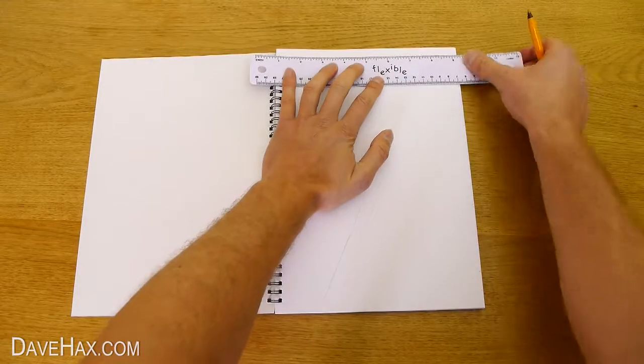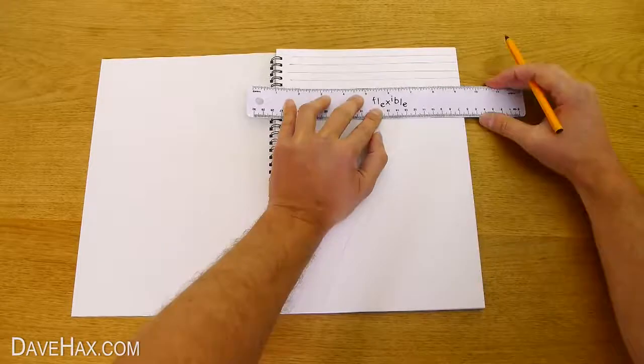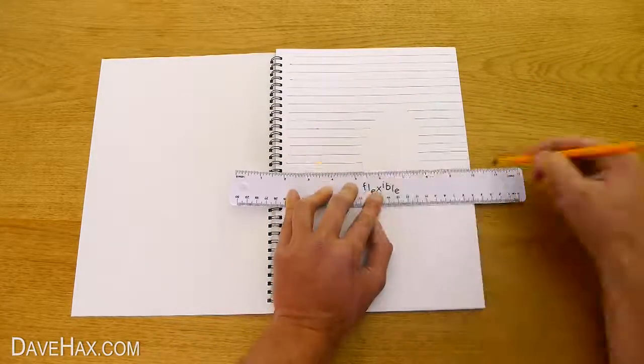Then using a ruler and a pen, we're going to draw a line connecting the dots we made earlier like this. Work your way down the page but don't fill in the outline of the spoon.